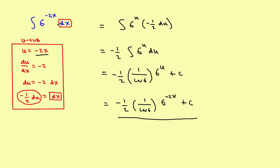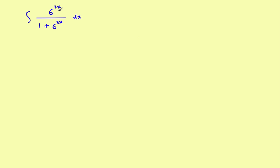So that's an example of u-substitution. Remember: whenever the exponent is anything other than a simple x, you've got to use u-substitution. Now the last example is going to be a little different because you'll have to approach the u-substitution differently. On all u-substitution problems, you always want to pick u so that its derivative eliminates whatever part of the problem you're trying to get rid of.